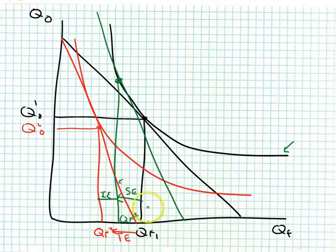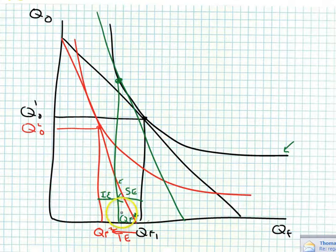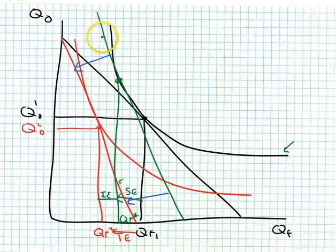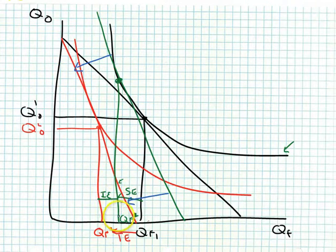The substitution effect: as price went up I substituted out of food — ate less food — and actually into other goods. For the income effect, income effects always involve a parallel shift. We move from the green imaginary budget line parallel to the new red one, giving us the income effect — the movement from QF star to QF2.